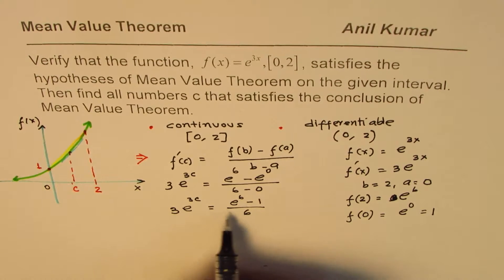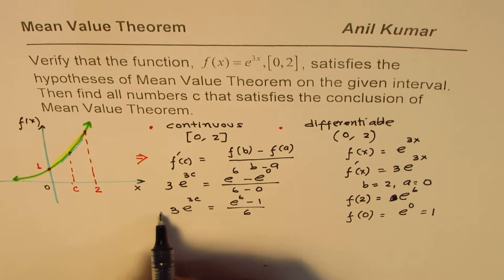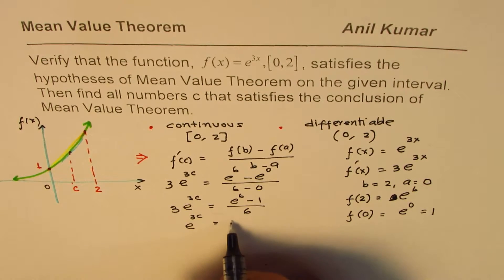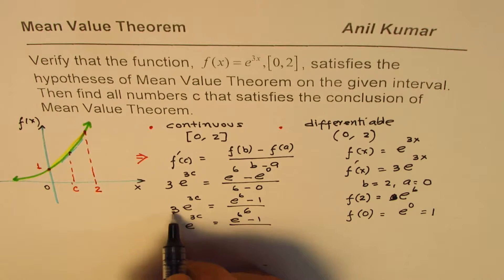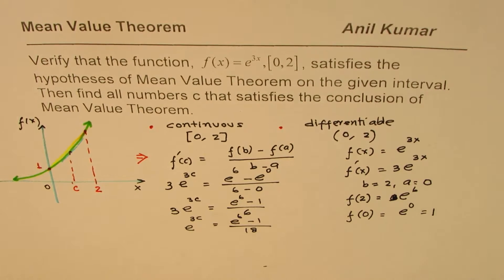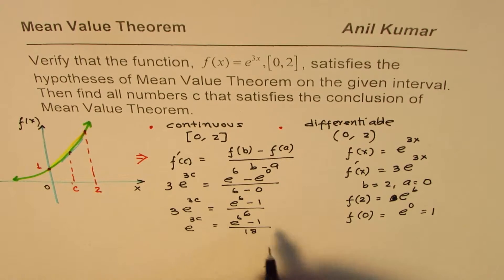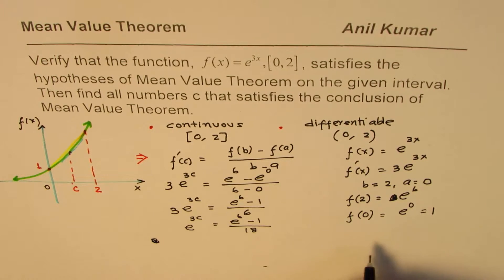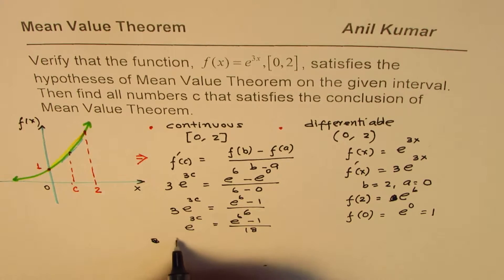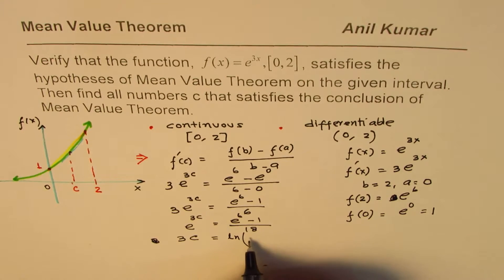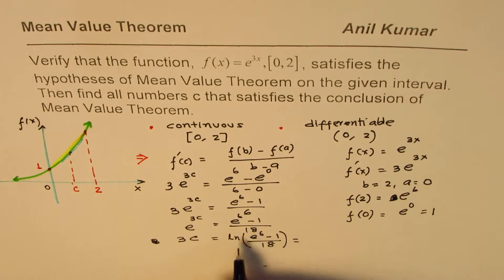We can calculate the answer by taking the natural log on both sides. First, rearrange: e^(3c) = [e^6 − 1] / 18. Taking the natural log of both sides gives: 3c = ln([e^6 − 1] / 18).